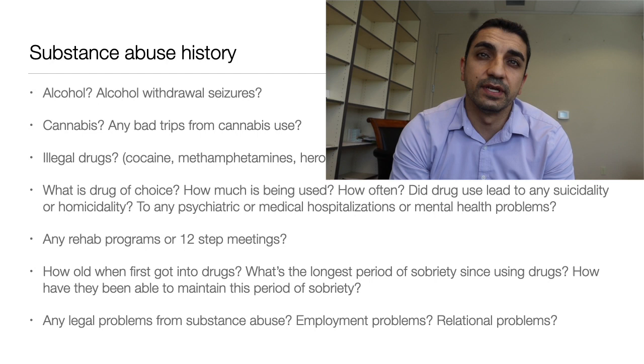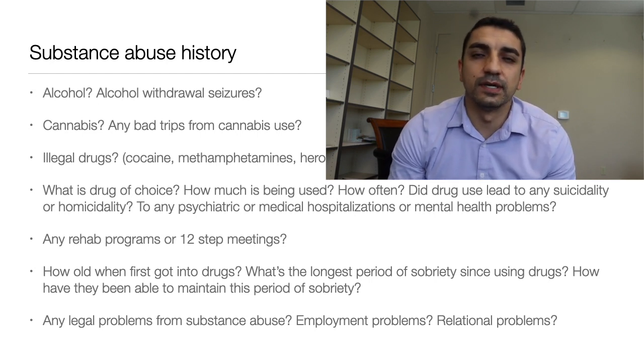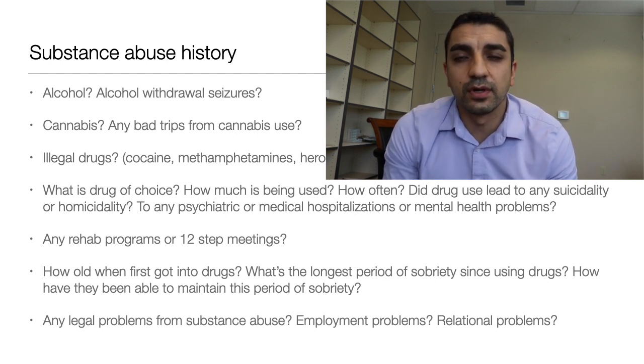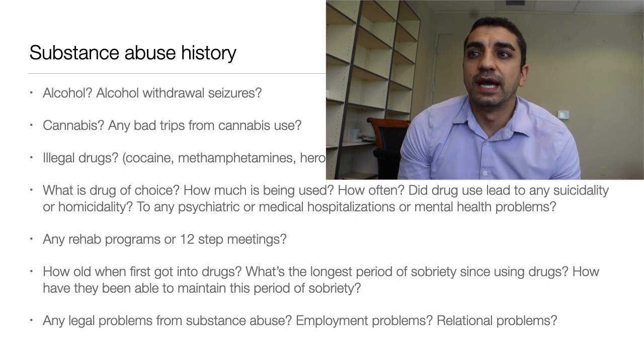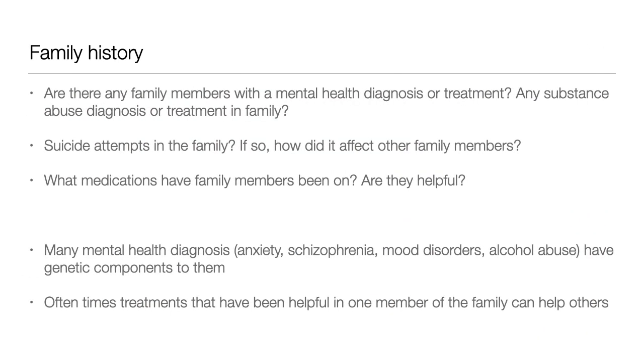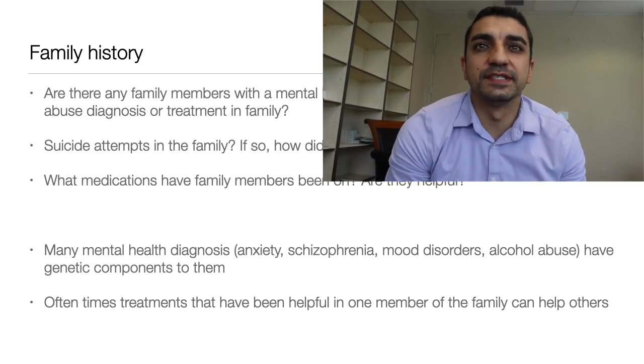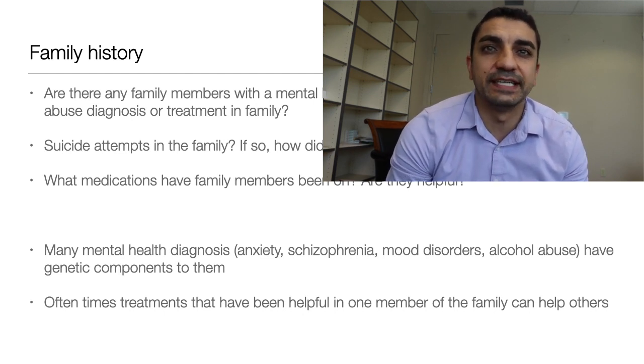Substance abuse history is important because it can affect mental health or even be a cause of the problems. Ask about alcohol, cannabis, any illegal drugs — have there been any seizures from alcohol withdrawal, any bad trips from cannabis or other drugs, including non-prescription medications? What is their drug of choice, how much is used, how often? Has this led to suicidal or homicidal thoughts, or any psychiatric hospitalizations? Have they tried rehab or 12-step programs? Has it affected their legal life — jail, prison, DUIs — or caused employment or relationship problems?